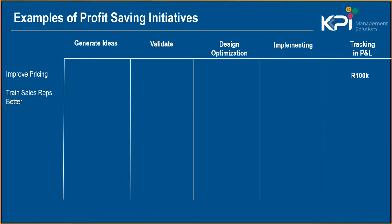We might have another project — train sales reps better — also valued at a hundred thousand, but when we validate it we can only validate 40,000. We've lost another 60,000 — no problem, let's move it forward and track it through the funnels.